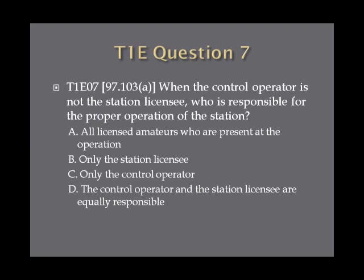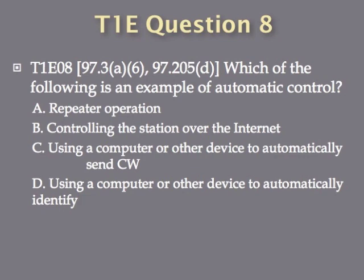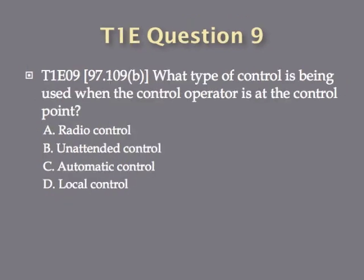Question 7: When the control operator is not the station licensee, who is responsible for the proper operation of the station? A, all licensed amateurs who are present at the operation. B, only the station licensee. C, only the control operator. D, the control operator and the station licensee are equally responsible. Question 8: Which of the following is an example of automatic control? A, repeater operation. B, controlling the station over the internet. C, using a computer or other device to automatically send CW. Or D, using a computer or other device to automatically identify. Question 9: What type of control is being used when the control operator is at the control point? A, radio control. B, unattended control. C, automatic control. Or D, local control.